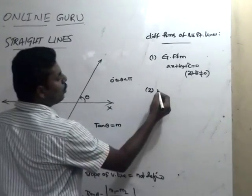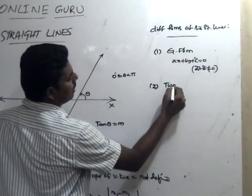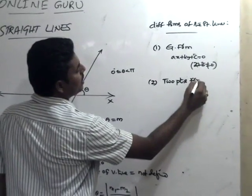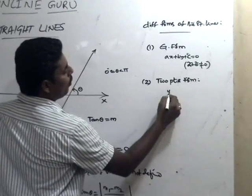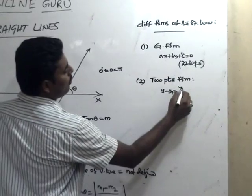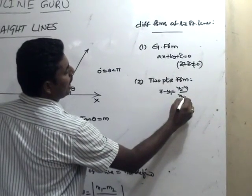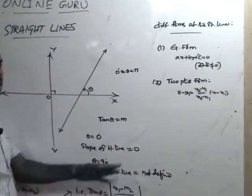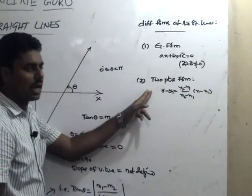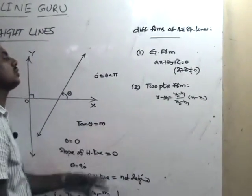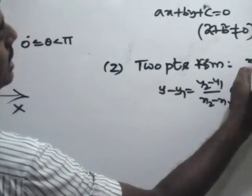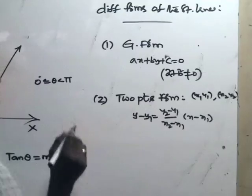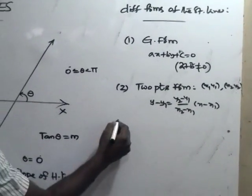The second form is the two-point form. The equation of a straight line passing through two points (x1, y1) and (x2, y2) is: y - y1 = [(y2 - y1)/(x2 - x1)] · (x - x1).